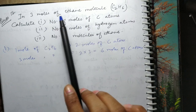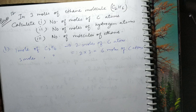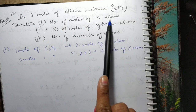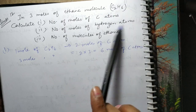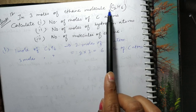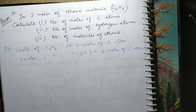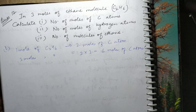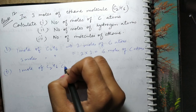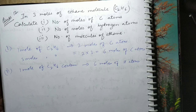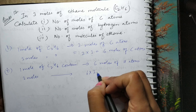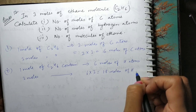Bachche confuse karte hain — C₂H₆ ka 1 mole lete hain to usmein further Avogadro's number of molecules hoti hain, aur molecule mein atoms. Aapko poocha tha number of moles of carbon aur hydrogen atoms. 1 mole of C₂H₆ contains 6 moles of hydrogen atoms. So 3 moles of C₂H₆ = 6×3 = 18 moles of hydrogen atoms.